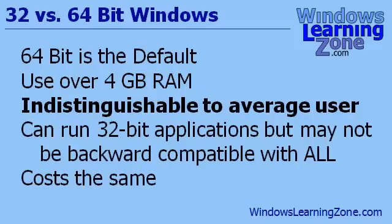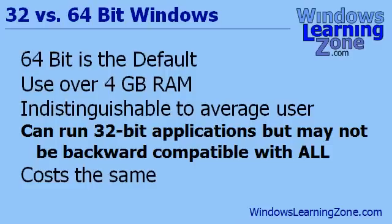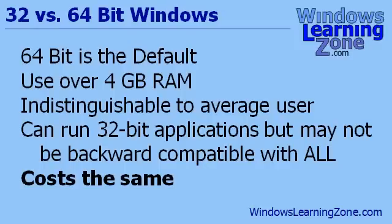For the most part, the version you have is completely indistinguishable to the average user — you really can't tell the difference between 32-bit and 64-bit Windows. The reason 32-bit Windows is still available is because some older 32-bit applications may not work with 64-bit Windows. They're rare, but they are out there. So if you have a mission-critical application for your business that you absolutely have to have and it's not compatible with 64-bit Windows, then you might have to downgrade to 32-bit. The good news is both versions cost the same. In order to take full advantage of 64-bit Windows, you also have to have 64-bit applications, like Microsoft Office, that take full advantage of that 64-bit memory address.